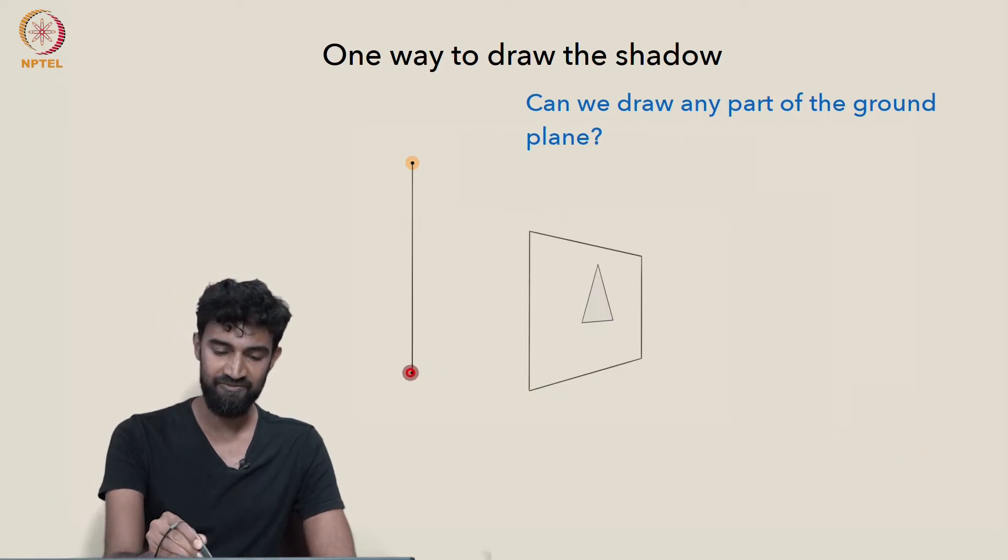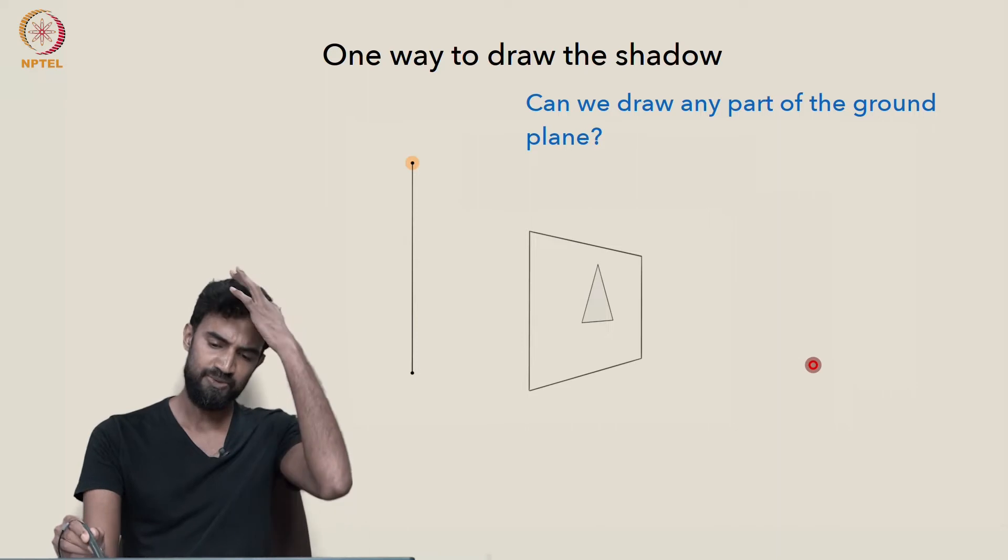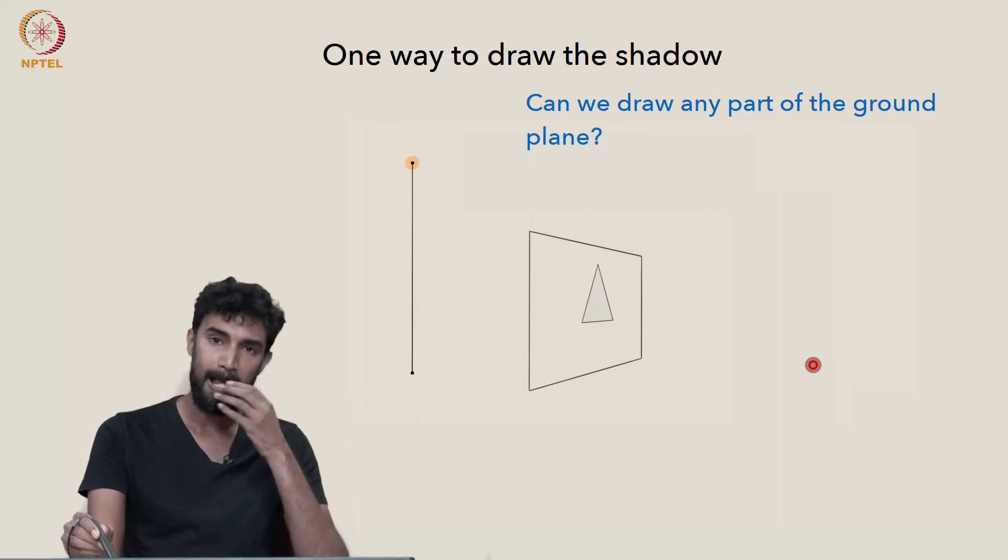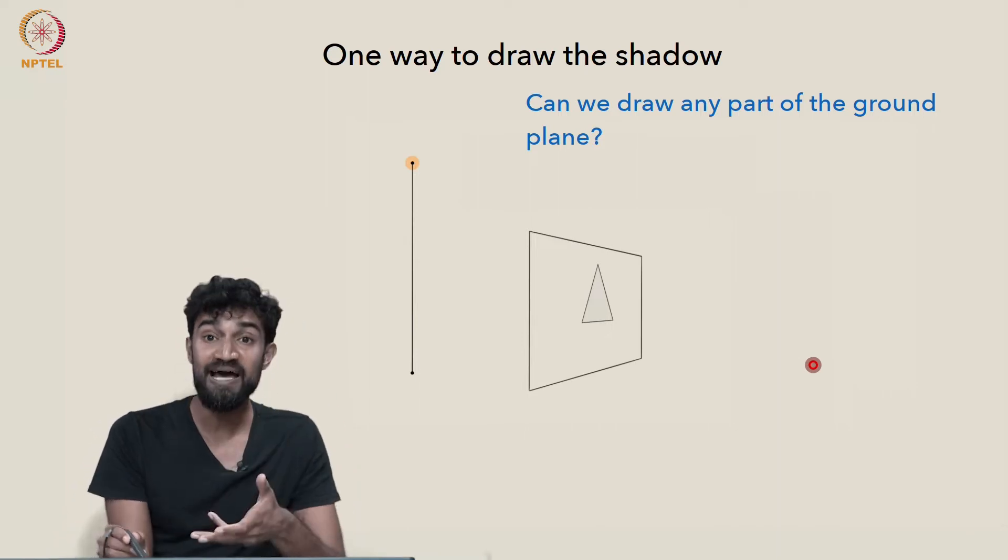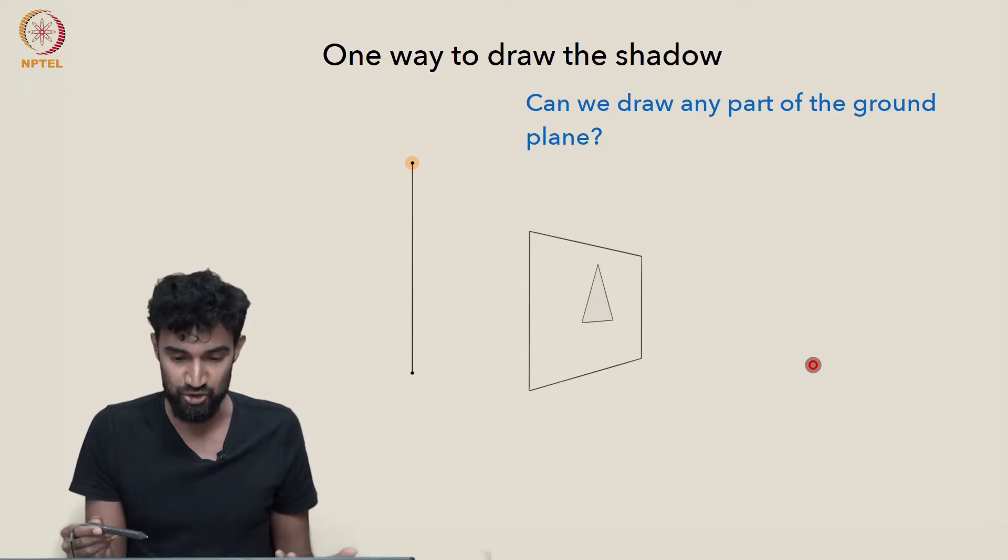Well, so far we have this point on the ground and this line on the ground. So we have a few points on the ground plane and we even have this line here. So we have some information about the ground plane. So using that, can we get any more information about the ground plane? Are there any more points or lines that we can draw?